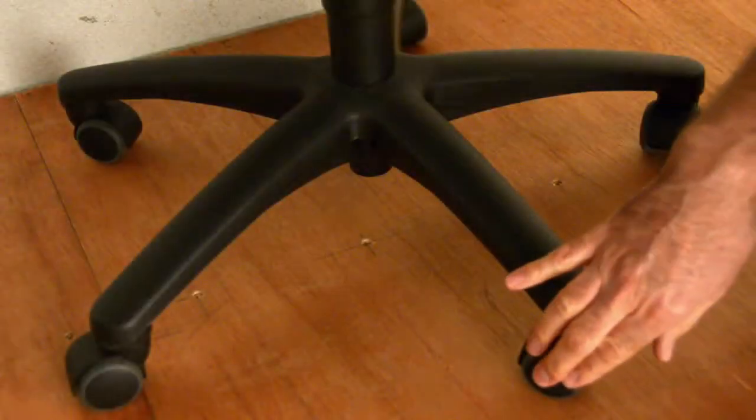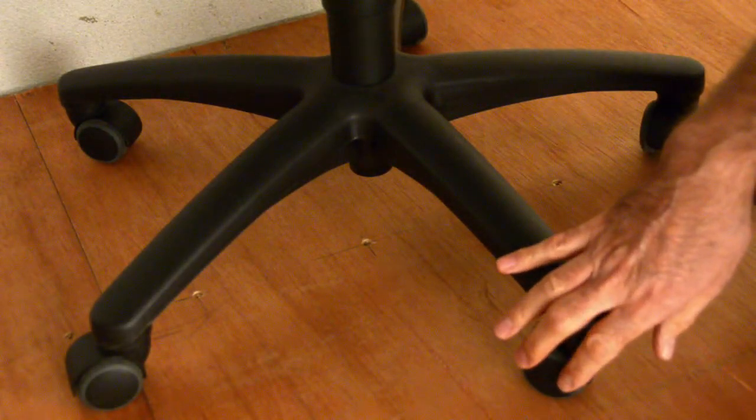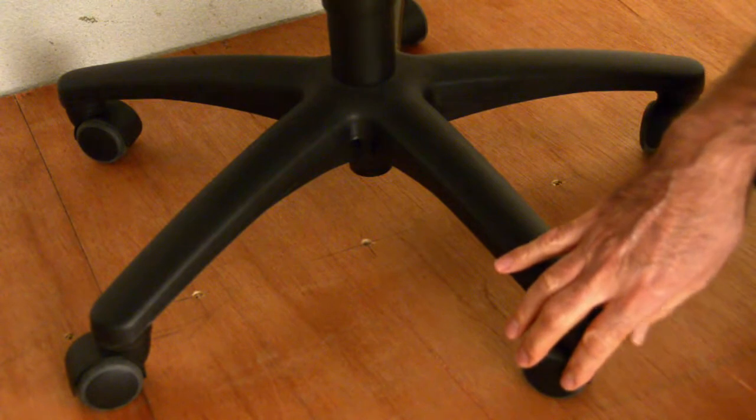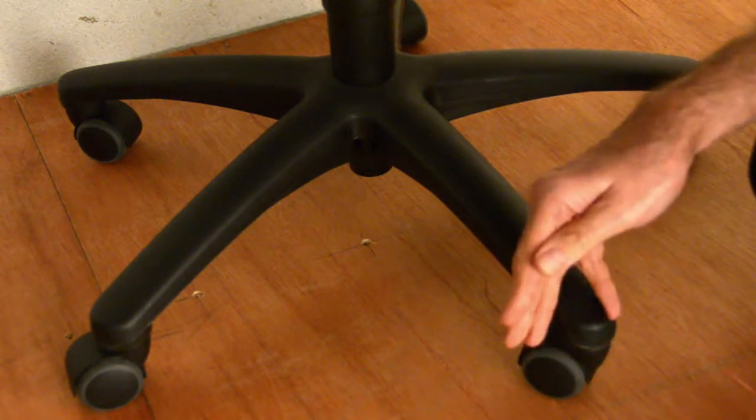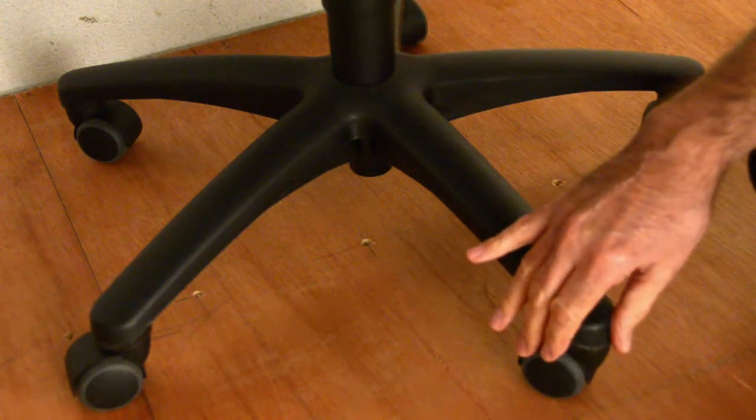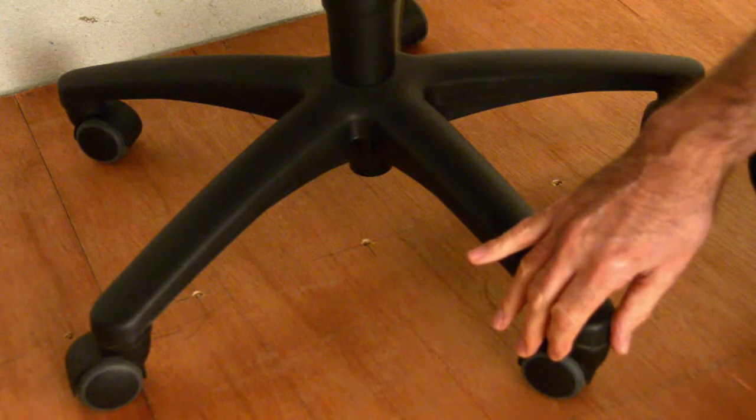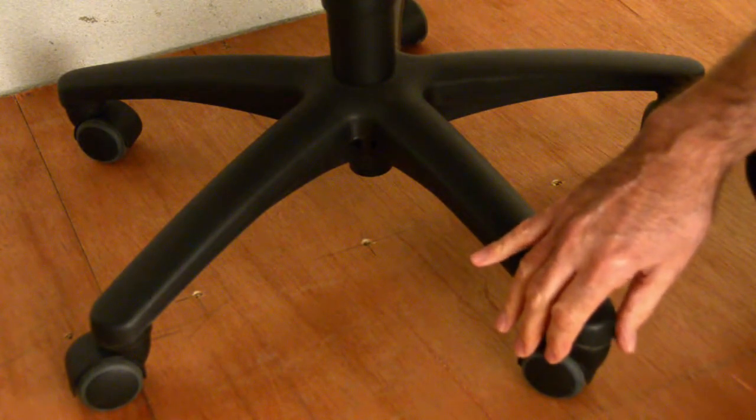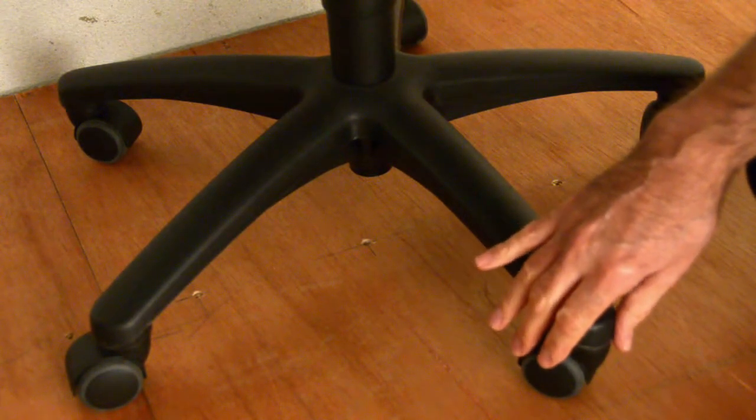Let's start by looking at the base of the chair and the casters. We have two types of caster available for the Solar Chair. The standard caster, which you'd use on a carpeted floor, or a soft caster, which you specify for a hard floor. The soft caster is silent and prevents the chair racing off at high speed on a hard floor.